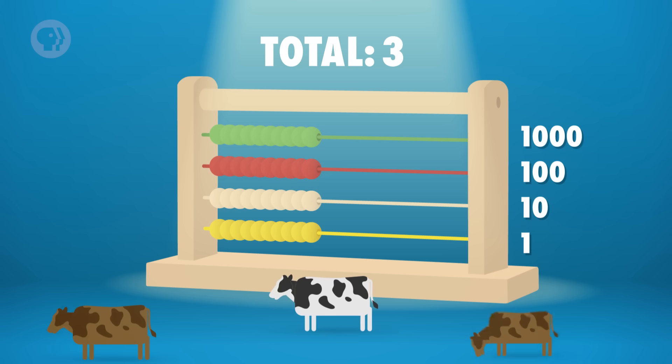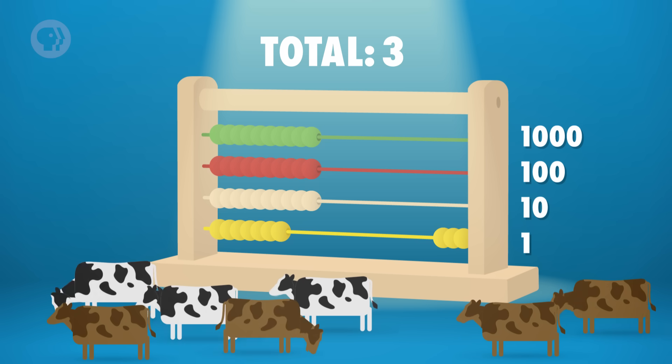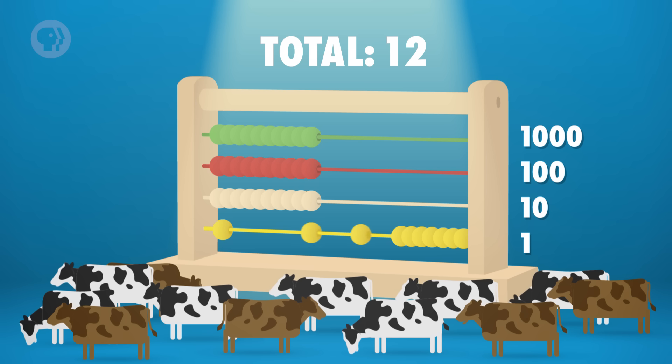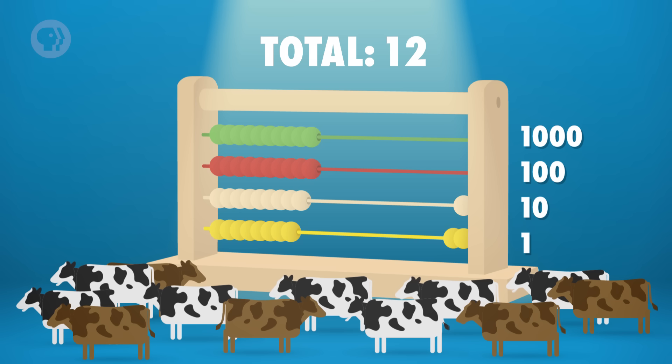Let's say we have 3 heads of cattle, represented by 3 beads on the bottom row on the right side. If we were to buy 4 more cattle, we would just slide 4 more beads to the right for a total of 7. But, if we were to add 5 more after the first 3, we would run out of beads. So we would slide everything back to the left, slide 1 bead on the second row to the right, representing 10, and then add the final 2 beads on the bottom row for a total of 12. This is particularly useful with large numbers.